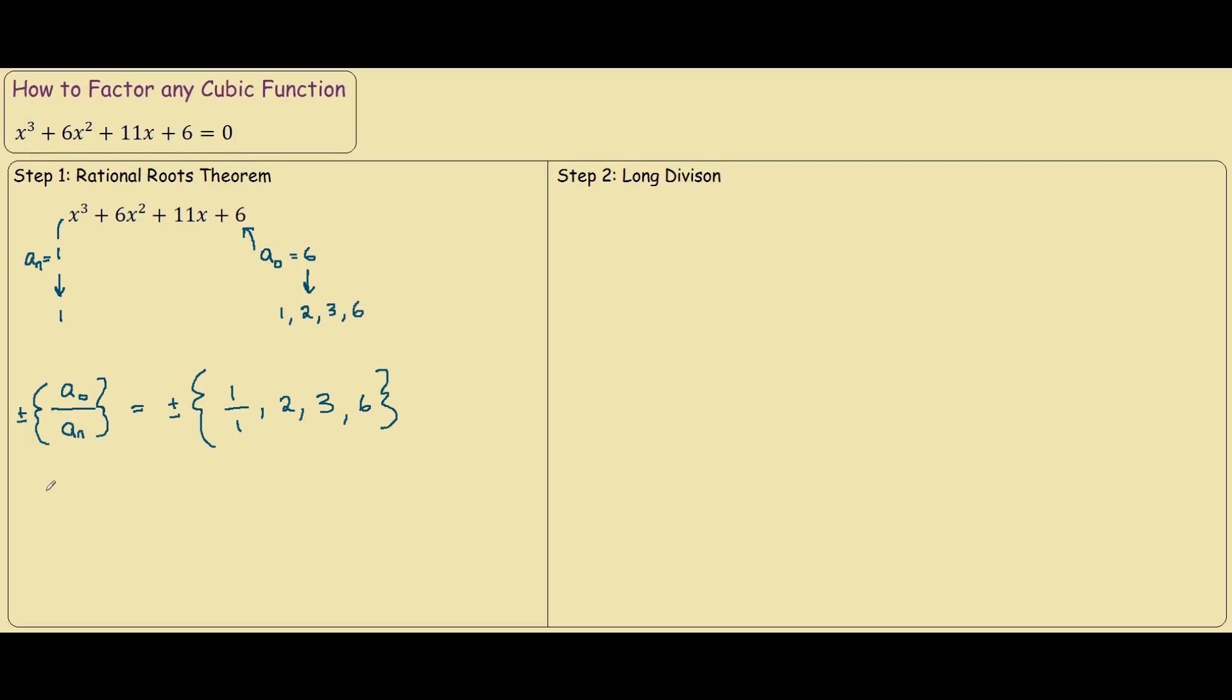So, let's try plugging 1 in. 1 cubed is 1, plus 6 squared is 6, plus 11, plus 6. We can already see this is not equal to 0.